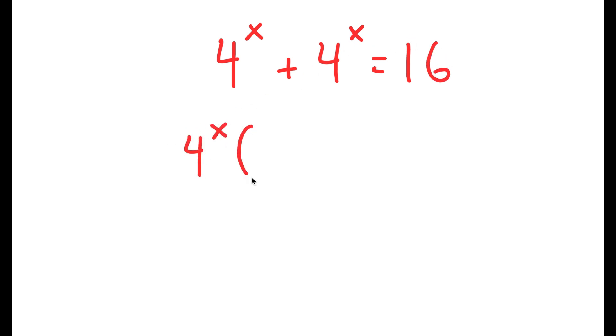So to solve this, I'm going to first factor out 4 to the power of x. So I get 4 to the power of x times 1 plus 1 is equal to 16, which turns out 4 to the power of x is equal to 8 by dividing both sides by 2.